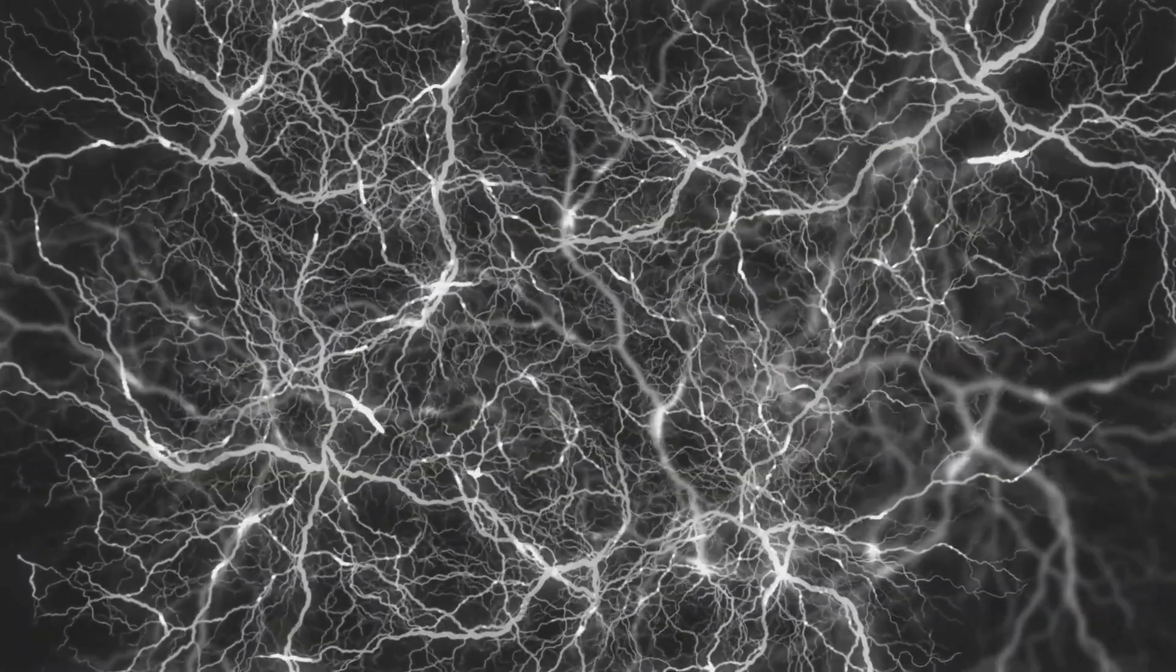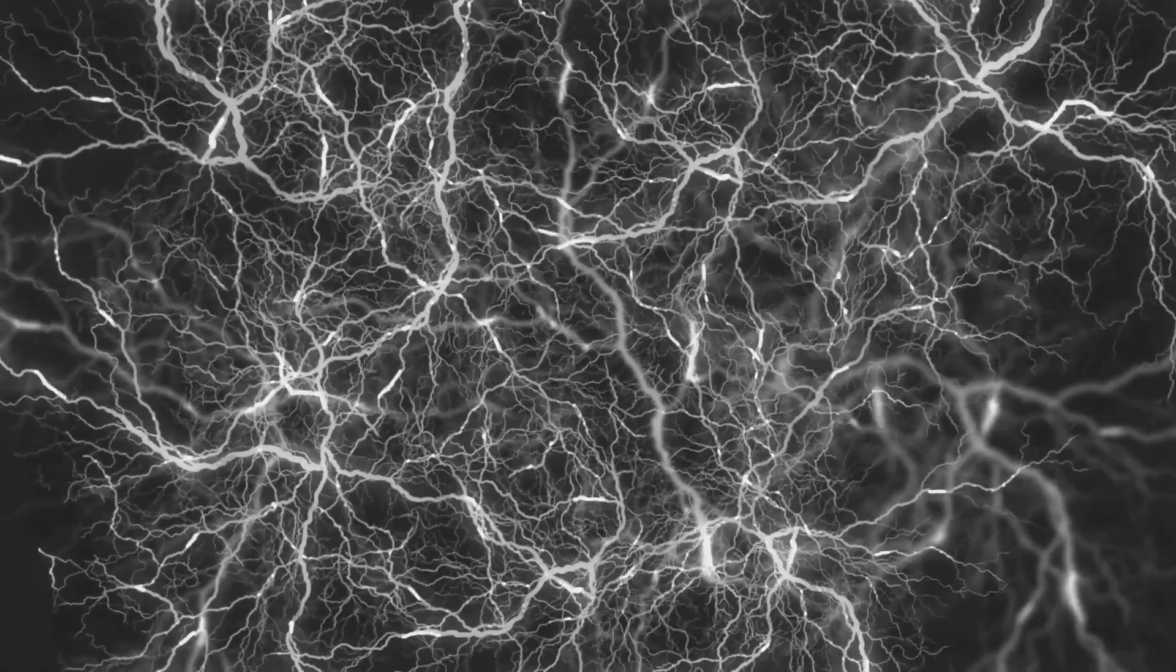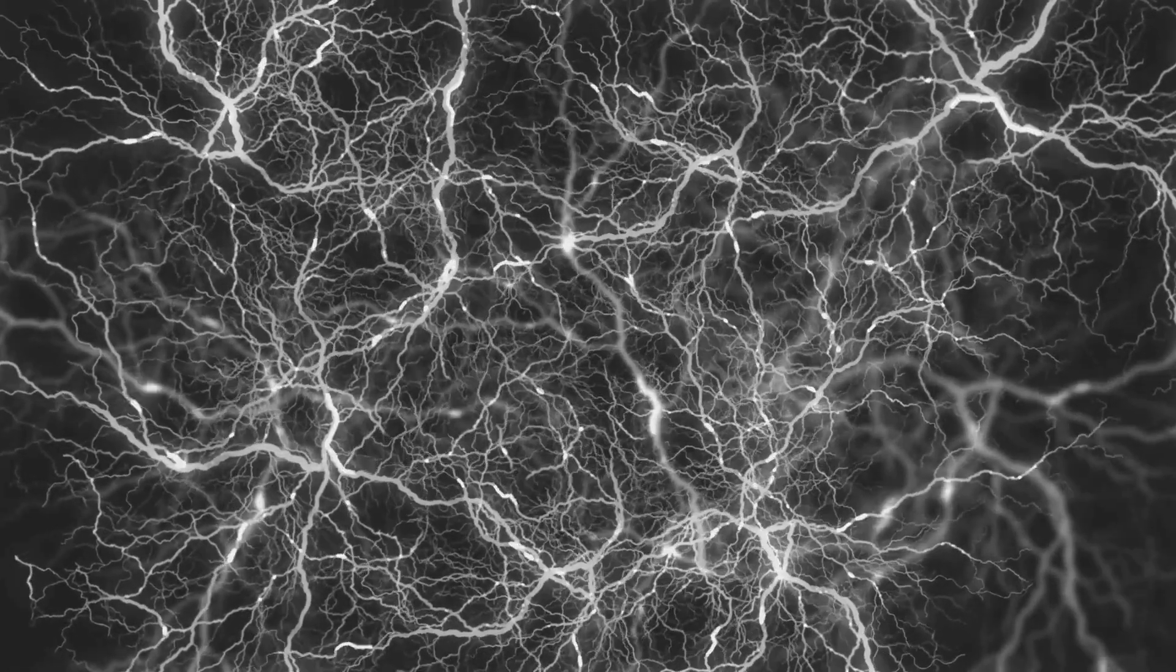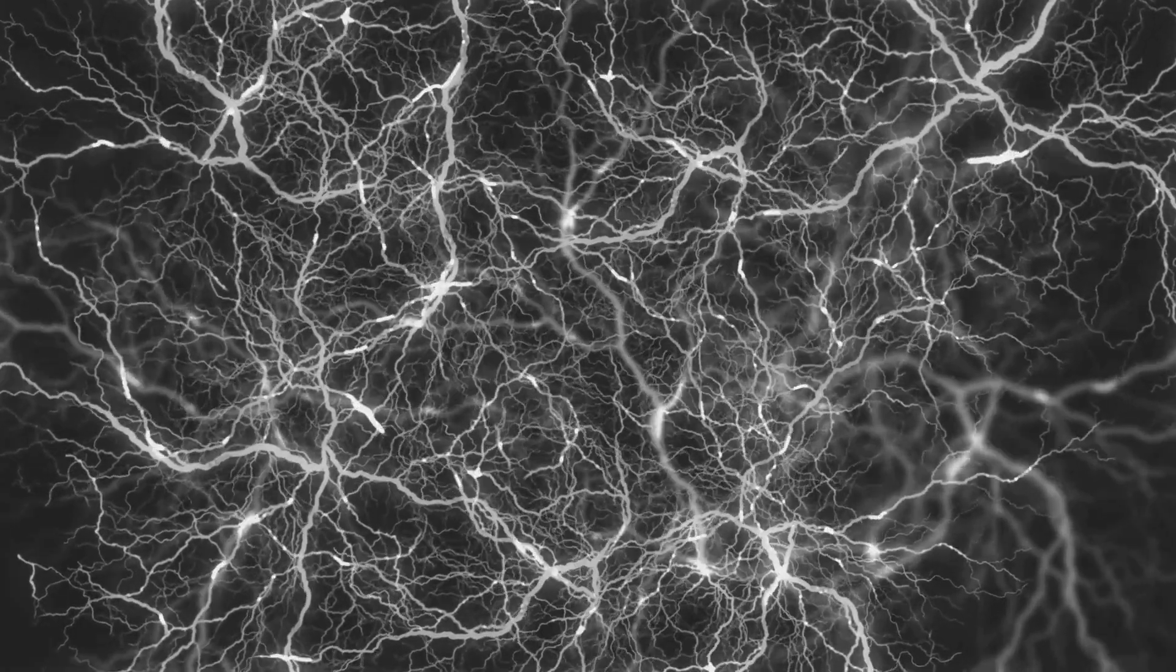These neurons communicate with each other, processing information and enabling us to think, learn, and make decisions. The efficiency and complexity of this communication are what make the human brain so powerful and unique.